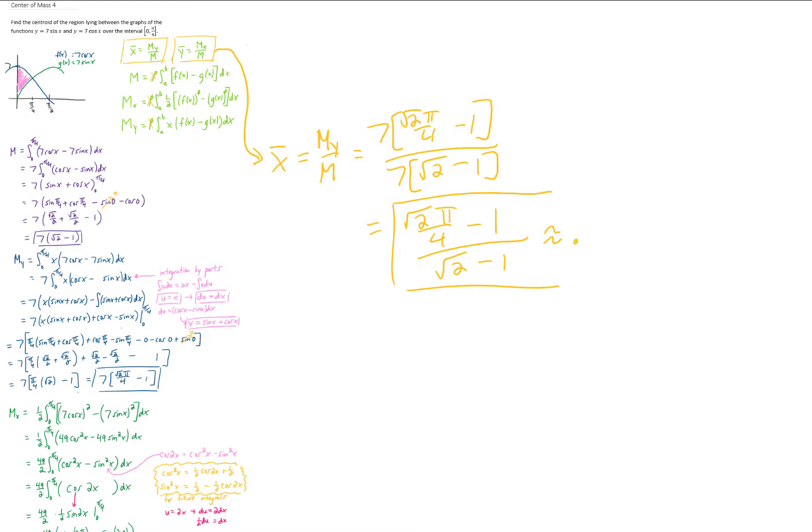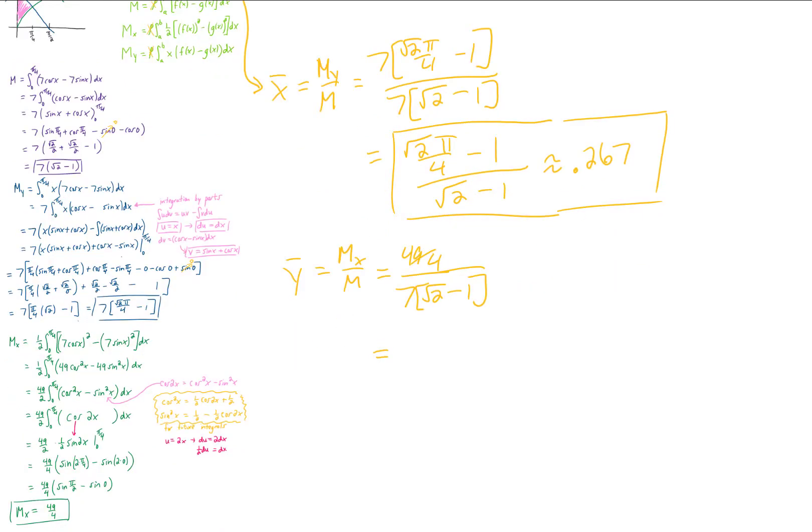If I plug that into a calculator, it's approximately 0.267. And I think that that makes sense given the region that we've drawn up here. As far as the y-coordinate of our center of mass, perhaps we could simplify that. 49 divided by 7 would leave a 7 in the numerator. This 4 here would end up in the denominator.